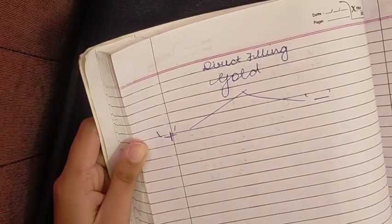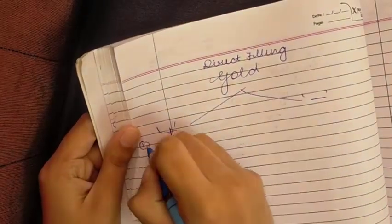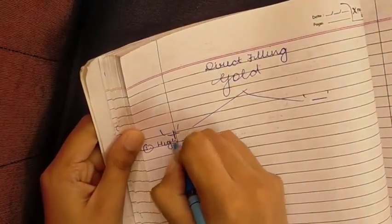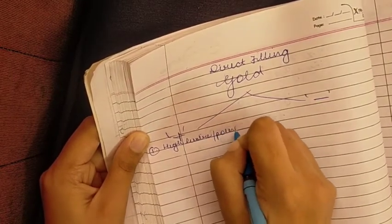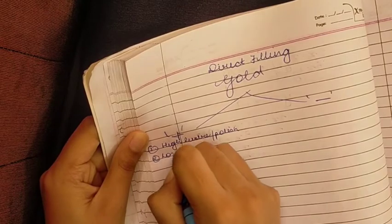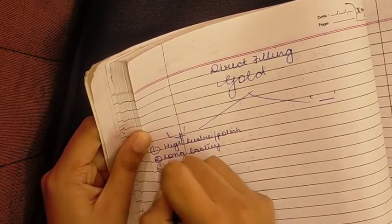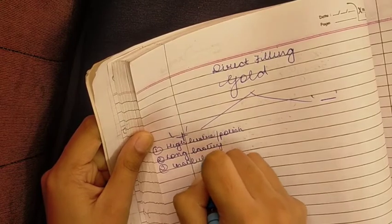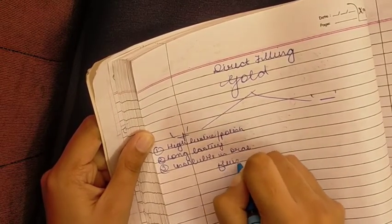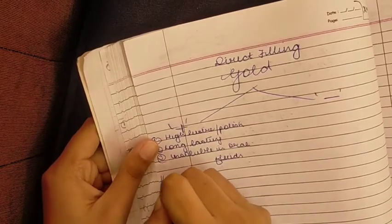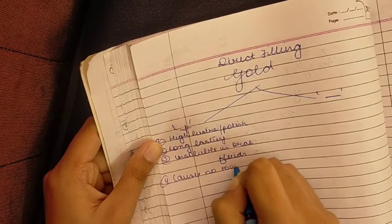Coming on to the last part of direct filling gold, the advantages and disadvantages. The advantages are: high luster, polish, long lasting, insoluble in oral fluids, and causes no tooth discoloration.